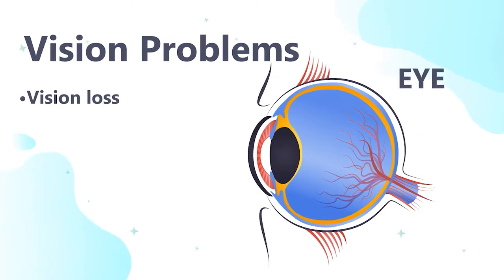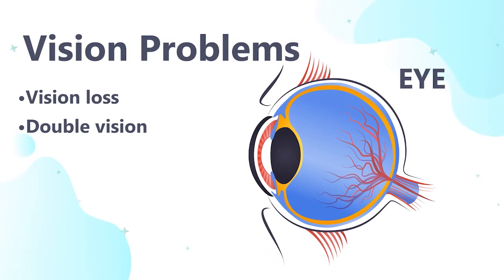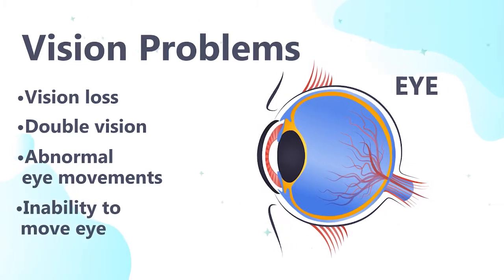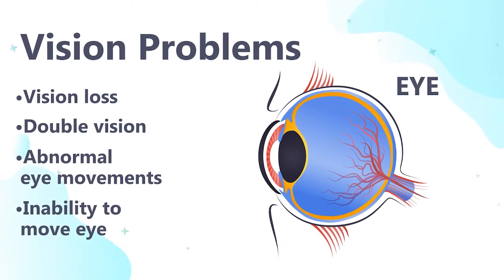MS can also affect vision and eye movements, causing temporary or permanent vision loss, double vision, abnormal eye movements, or an inability to move your eye. This can happen suddenly.